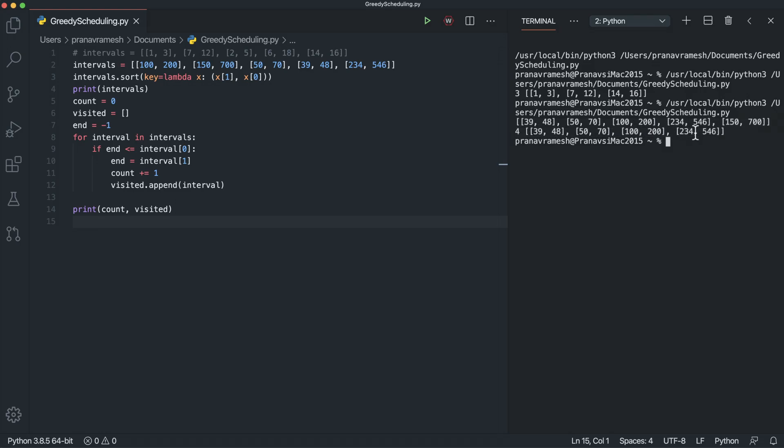And then we see that we can attend a total of four events. And our algorithm prioritized the (39,48) event, (50,70), (100,200), and (234,546). And we left off the event (150,700). So that's it for this program.